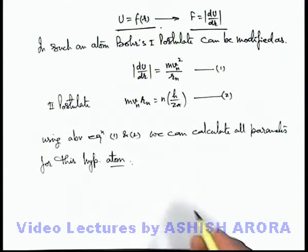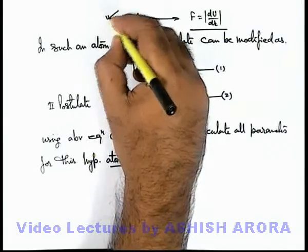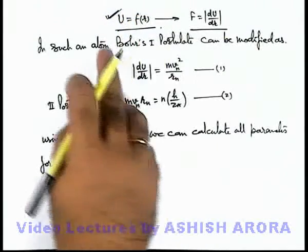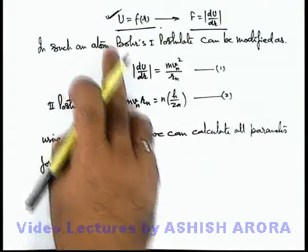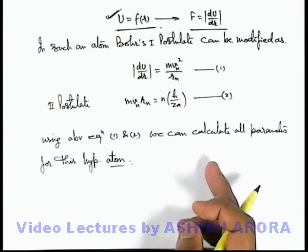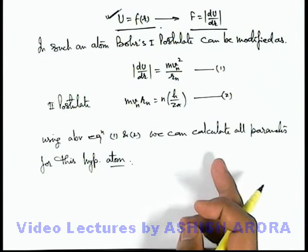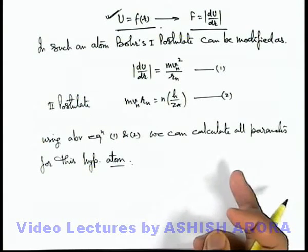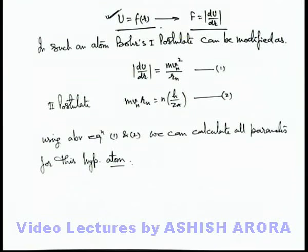So various numerical problems will be there in which we are given with the potential energy function, and using this potential energy function we are required to calculate the different parameters of the atom like radius of nth stable orbit, velocity of electron, and all other parameters which we have studied for hydrogen atom.